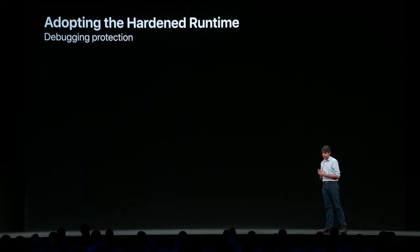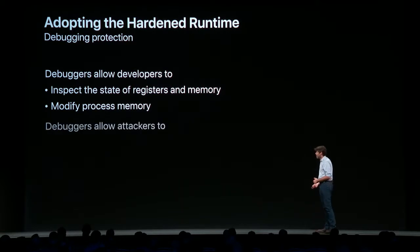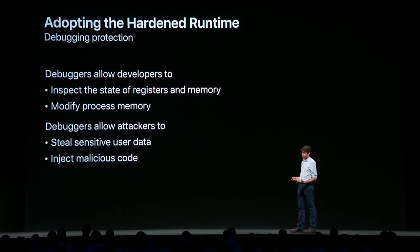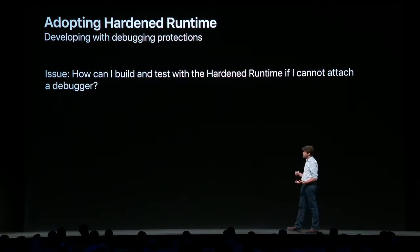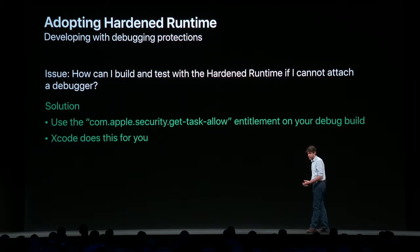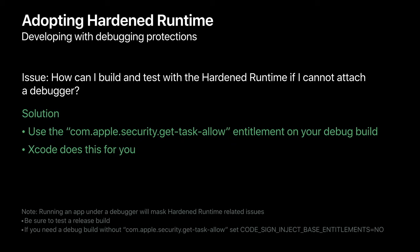Debuggers allow developers to inspect the state of registers and memory and modify process memory, but that also means they allow attackers to steal sensitive user data and inject malicious code. By default, the hardened runtime doesn't allow debugging of hardened processes. If you need to use the debugger during development, the getTaskAllow entitlement is what you need — it allows your app to be debugged along with enabling DYLD environment variables. Be careful: if you do all of your testing with a debugger attached, this will mask some hardened runtime issues, especially around runtime code signing enforcement. Once the debugger attaches, we can't enforce code signing enforcement anymore because debuggers automatically change your data within your process. Make sure you test your release build to see what other effects runtime code signing enforcement might have.